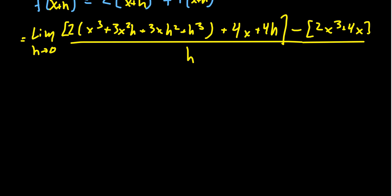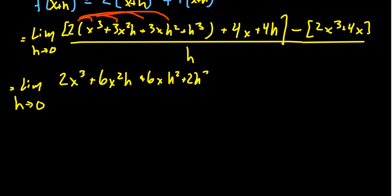So the next thing to do is distribute the 2 onto all of these pieces. I'm copying down the limit. It's important to make sure you write down the limit here because this is a limit calculation. We're going to get 2x³ + 6x²h + 6xh² + 2h³. We get 4x and we get 4h. And then we get -2x³ - 4x all over h.